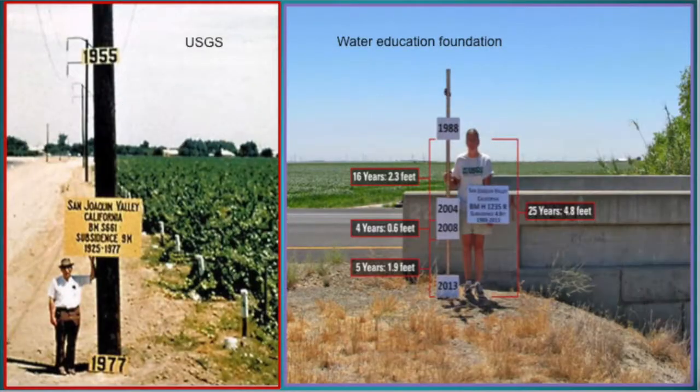If the recharge rate is negative, then more water is leaving the aquifer than being replenished. If too much water is pumped out of an aquifer, ground subsidence can occur. This photo from the San Joaquin Valley in California shows a very large drop in the land surface from pumping too much water.